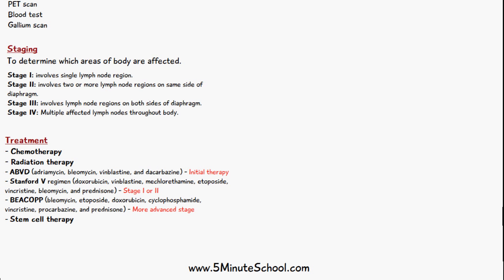The Stanford 5 regimen is usually given in stage one or stage two. It consists of doxorubicin, vinblastine, mechlorethamine, etoposide, vincristine, bleomycin, and prednisone.